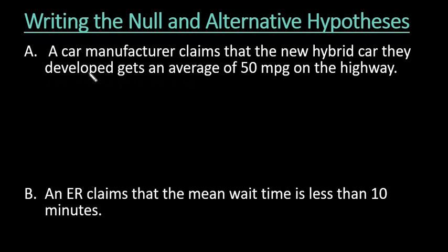The first one is that a car manufacturer claims that the new hybrid car they developed gets an average of 50 miles per gallon. So with this, the first thing you want to do is figure out what symbol you want to use. Since we're talking about the average, remember that is really the mean, and the mean of the population is μ.